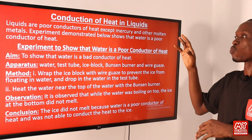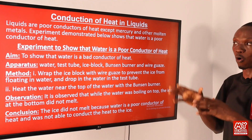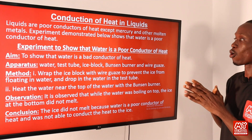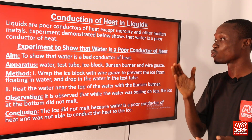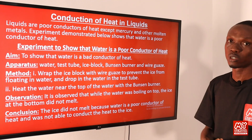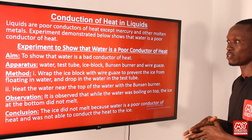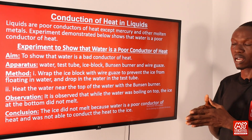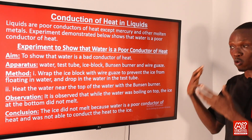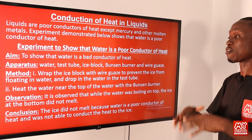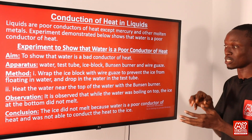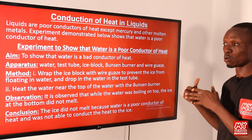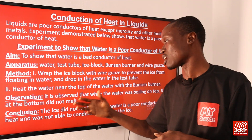We describe an experiment to show that water is a poor conductor of heat. Aim: to show that water is a bad conductor of heat. Apparatus: water, a test tube, an ice block, a Bunsen burner, and wire gauze. Method: first, wrap the ice block with wire gauze — this prevents the ice from floating when placed in water. Then drop the wrapped ice block into the water in the test tube, and heat the water near the top using the Bunsen burner.